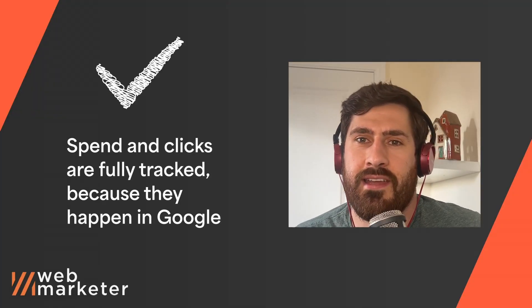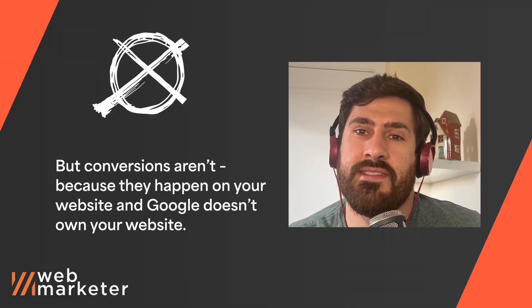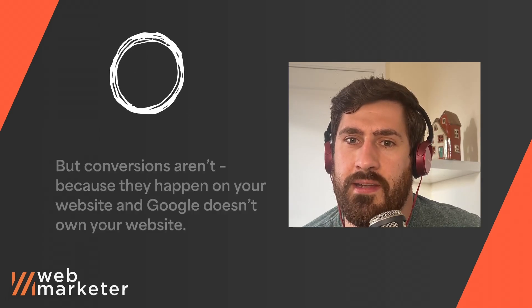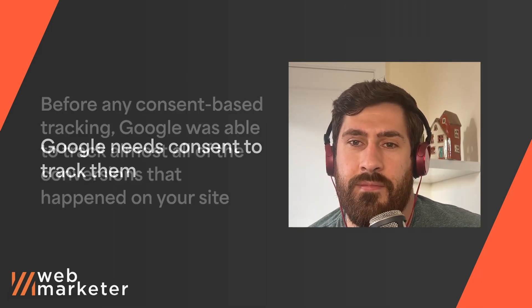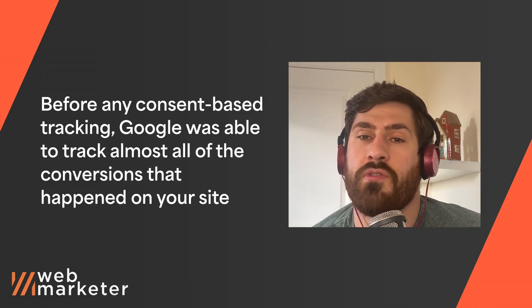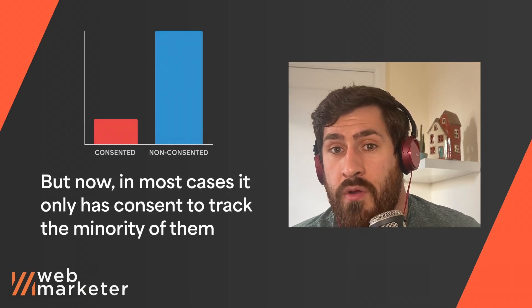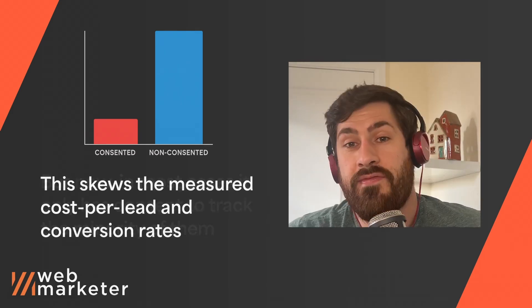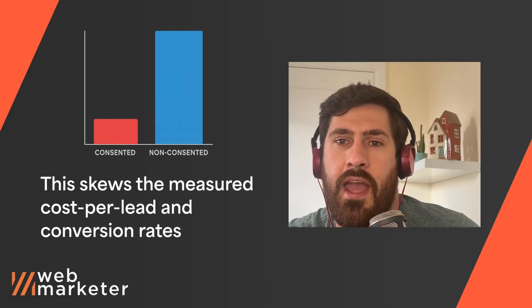Losing that data has a major side effect: it makes the cost per conversion of ads go up exponentially as soon as you put consent mode on. Both spend and clicks are fully tracked since they happen in Google. But conversions aren't, since they happen on your website and Google needs consent to track them. Before consent-based tracking, Google was able to track almost all of the conversions on your site. But now it only has consent to track the minority of them, which skews both the measured cost per conversion and your conversion rates.